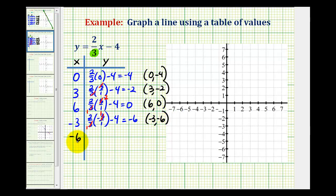And then the last x value we selected was negative 6, so we'll have 2/3 times negative 6 over 1, minus 4. We have a common factor of 3, this simplifies to 1, this simplifies to negative 2. So, now we have negative 4 minus 4, that's negative 8. Again, this was 2 times negative 2, that's negative 4 minus 4, negative 8. So, the line must also contain the point with x coordinate negative 6, y coordinate negative 8.